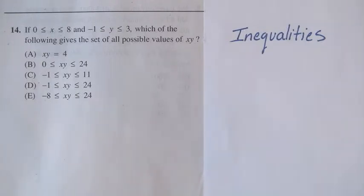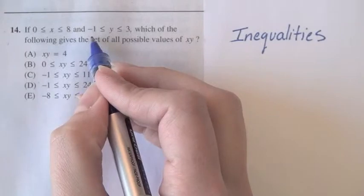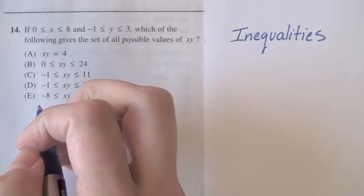What is the smallest possible value of x times y? Well, the smallest possible value of y is negative 1, and the smallest possible value of x is 0, but those multiplied together would give you 0.